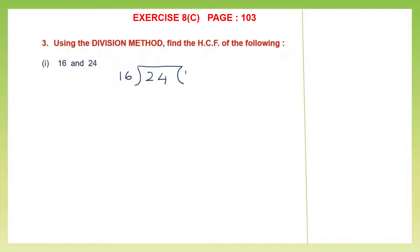So 16 ones are 16. This is like normal division, the first step. Then we do our subtraction: 14 minus 6 is 8 and here it is 0, so we have a remainder of 8. Now we are going to continue our division by using this remainder as our next divisor. So I am going to continue this division like this.